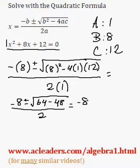And here we're going to get negative 8, plus or minus. 64 minus 48, 16. All over 2.